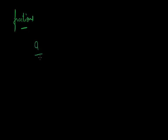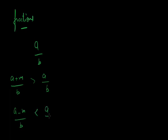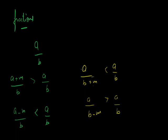Now coming to fractions: if I have a upon b, and I add the same quantity m to the numerator, it becomes a plus m upon b, and this quantity is bigger. If I subtract m from the numerator, the quantity becomes smaller. For the denominator: if I increase the denominator in a upon b plus m, the value decreases. If I decrease the denominator, the value increases.